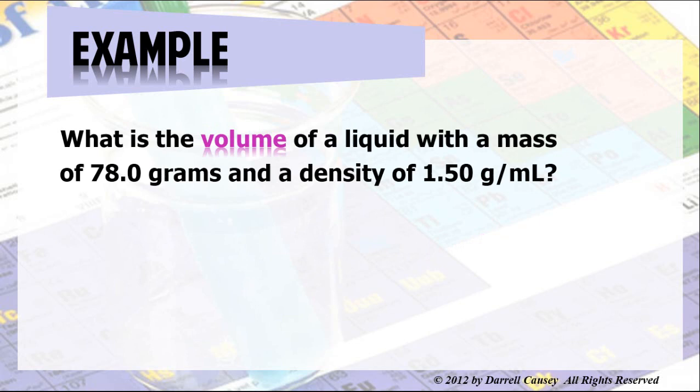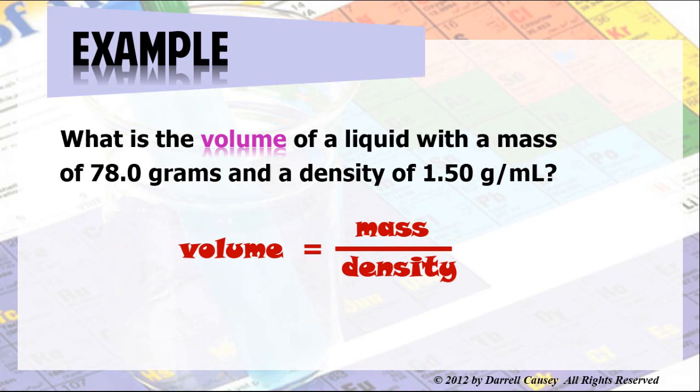How about another one? How about this time we calculate the volume using the mass and the density. So what is the volume of a liquid with a mass of 78.0 grams and a density of 1.50 grams per milliliter? Well, let's use our friend algebra here. And let's rewrite this equation and get volume equals mass divided by density.